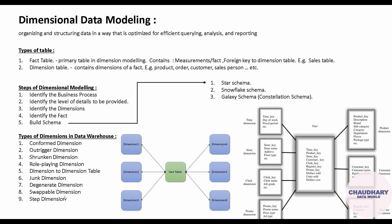There is also the concept of types of dimensions in the data warehouse. There are approximately nine frequently used dimension types, including conformed dimensions, degenerate dimensions, shrunken dimensions, and role-playing dimensions, among others. These are big concepts that I will cover in separate videos, so stay tuned to the channel. I have just mentioned them here to give you an overview of what types of dimensions exist in the data warehouse.